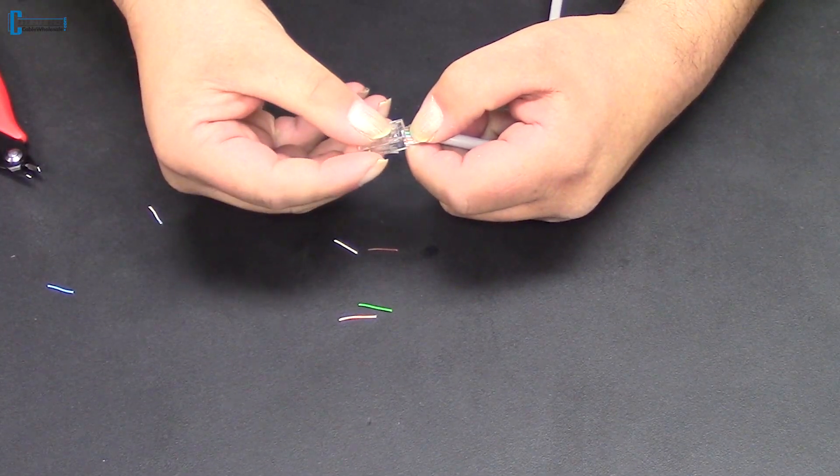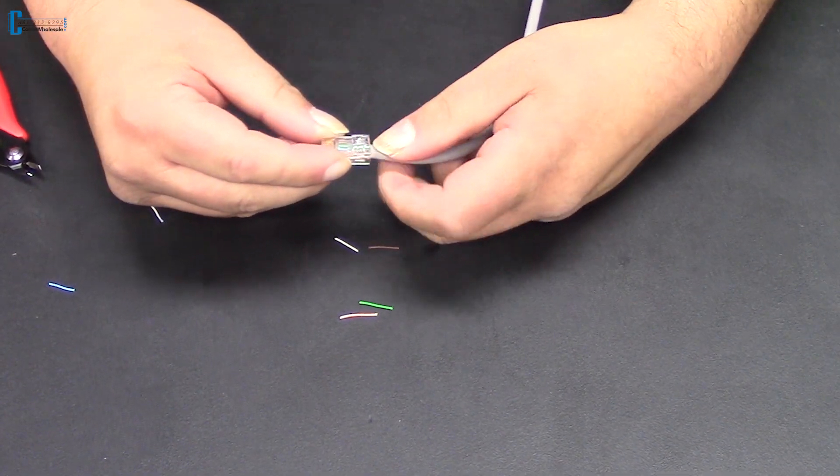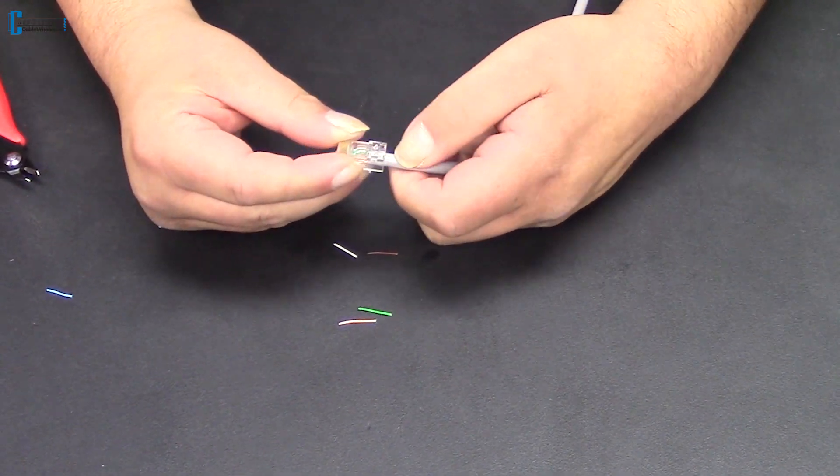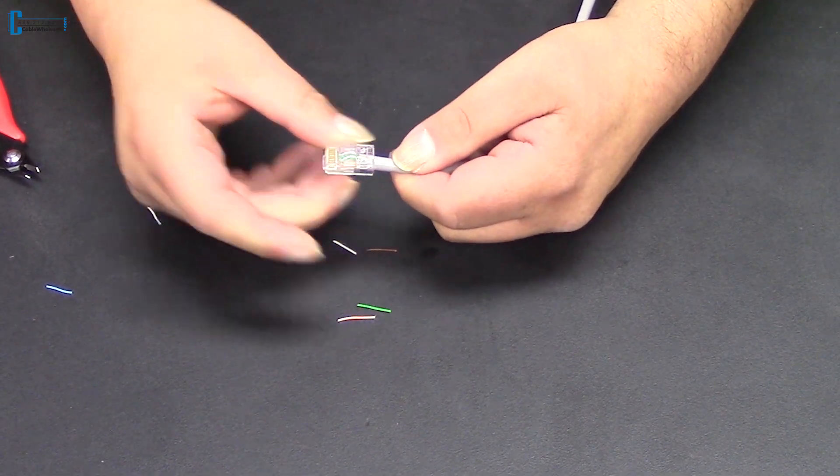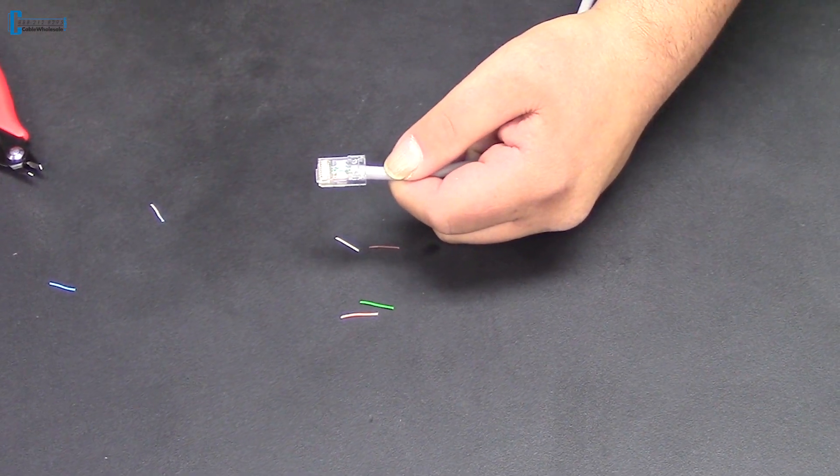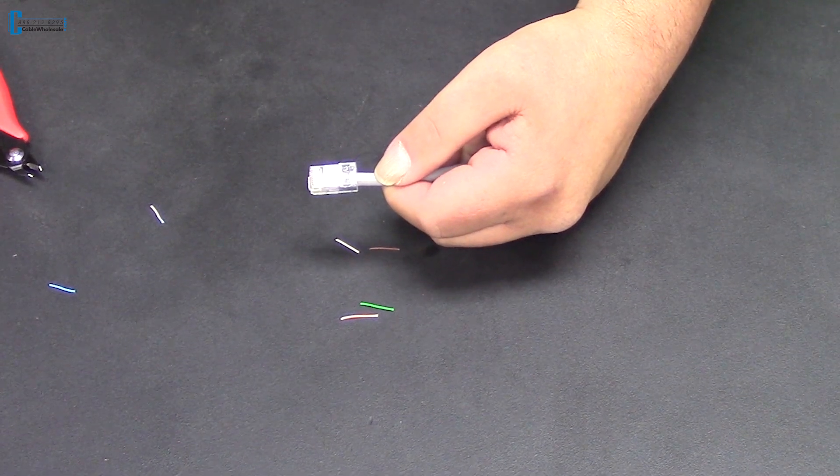Now with the tab facing away from you, insert the cable into the RJ45 end. Those slits we felt on the wire guide are the spaces where the contacts pass through to make contact with the individual conductors when we crimp it down.